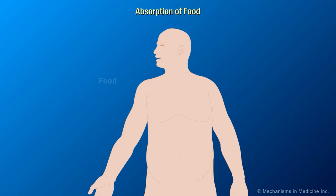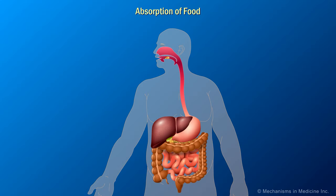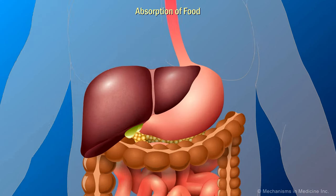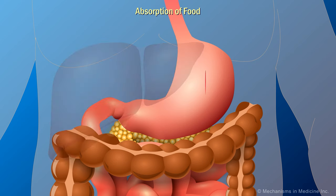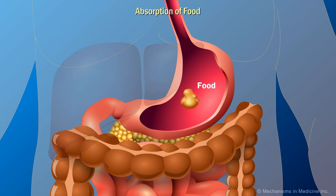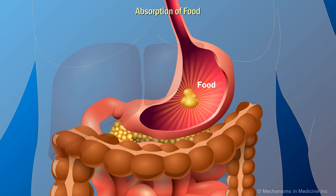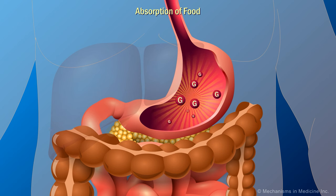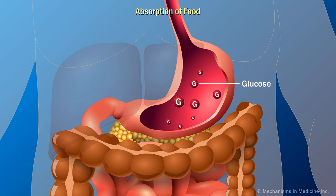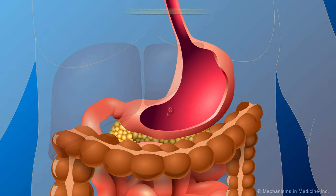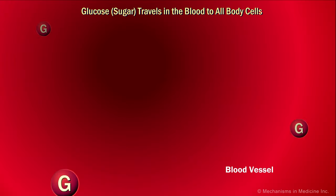When food is ingested, it travels along the digestive tract where it is broken down into its component nutrients in order to be absorbed into the bloodstream. One such nutrient is glucose, a simple sugar. Glucose gets absorbed by the intestines and then enters the bloodstream, traveling through the circulation to all body cells.